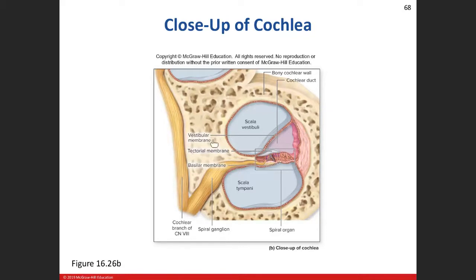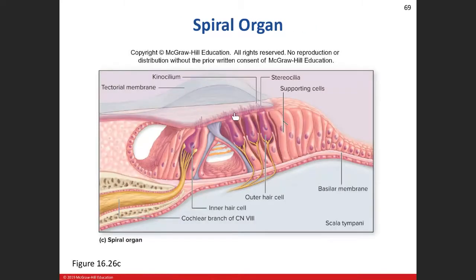Here's the cochlear duct — the membranous labyrinth. The bony labyrinth surrounds it with chambers containing perilymph, which is similar to interstitial or extracellular fluid. That's in the scala vestibuli and scala tympani. Inside the cochlear duct we have endolymph. Endolymph is rich in potassium — it's similar to intracellular fluid. Potassium is a cation, so if it enters a cell it will depolarize it.